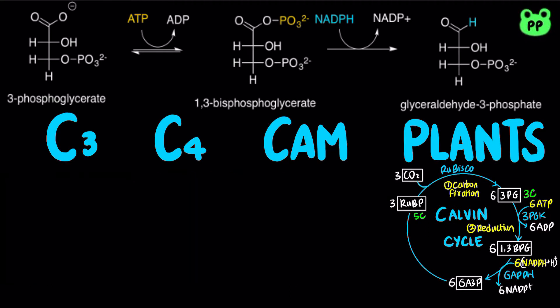In the second stage, a net total of six molecules of 3-phosphoglycerate is converted to six molecules of glyceraldehyde 3-phosphate, which hydrolyzes six ATP molecules and oxidizes six NADPH from the light reaction.